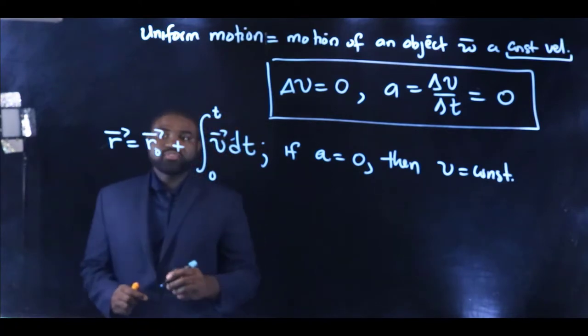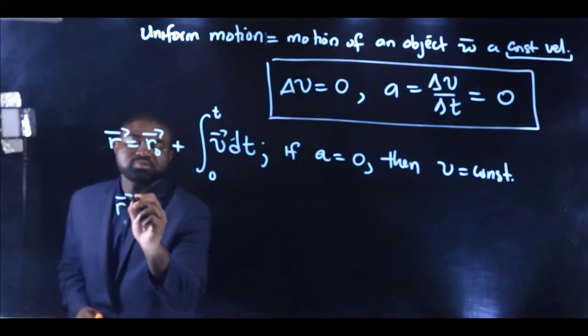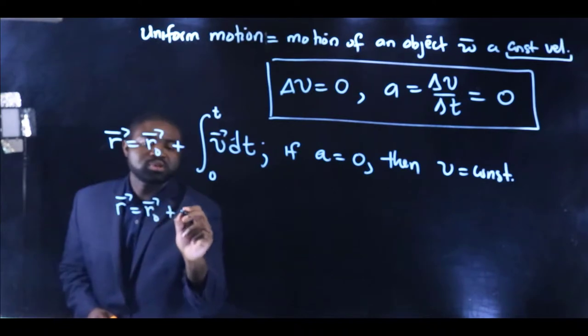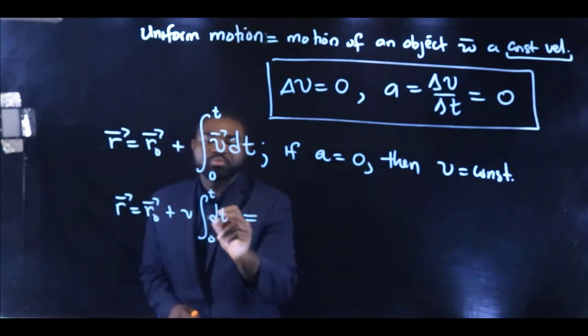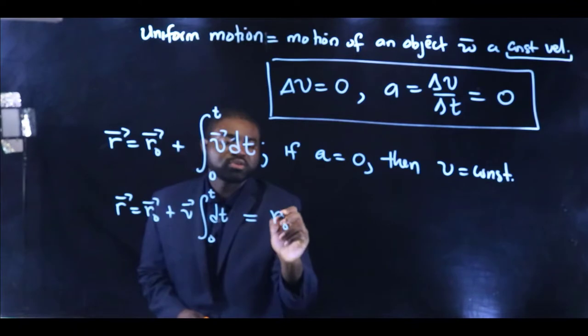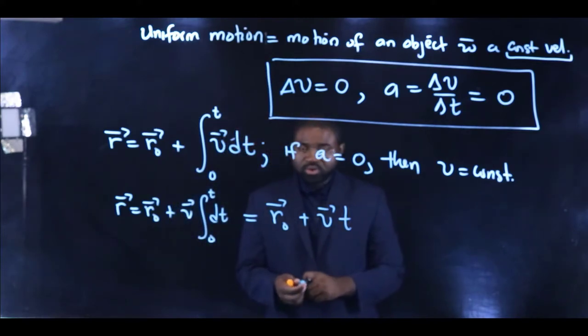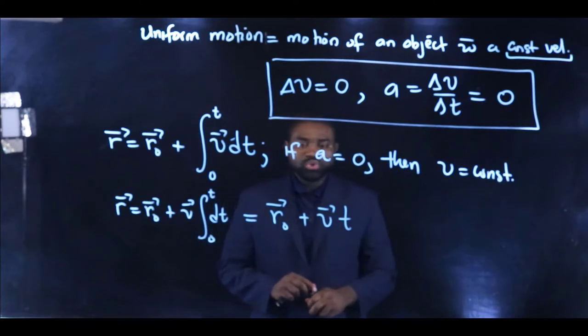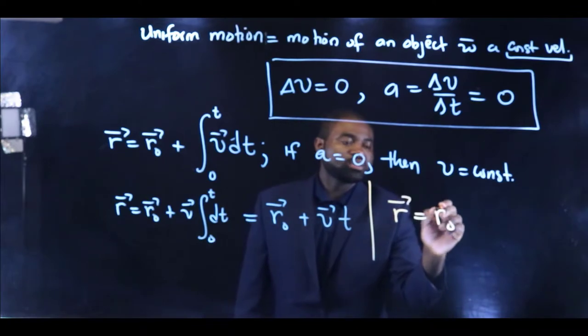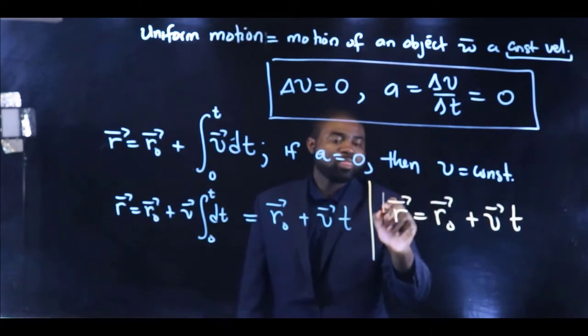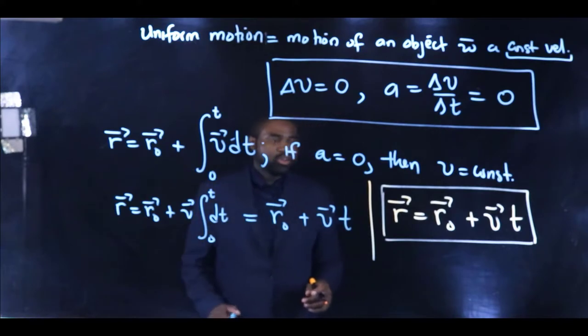And if that is the case, then we can take this outside of the integral sign. And R⃗ becomes R⃗₀ plus V⃗ times the integral from zero to t dt, which will be equal to R⃗₀ plus V⃗t. That means that for an object undergoing uniform motion, R⃗ is equal to R⃗₀ plus V⃗t. This equation describes uniform motion.